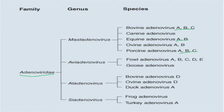Fowl adenovirus strains A through E are included in genus Aviadenovirus, along with Goose adenovirus. The genus Atadenovirus includes three species: Bovine adenovirus D, Ovine adenovirus D, and Duck adenovirus A. The genus Siadenovirus includes two species: Frog adenovirus and Turkey adenovirus A.